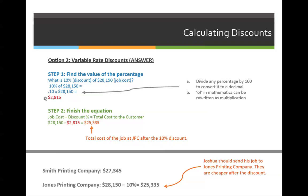We can rewrite that as 10% of $28,150, and then convert it to a math problem by dividing 10% by 100, which converts it to a decimal of .10. 'Of' becomes a multiplication sign, and then we bring down the last value. .10 times $28,150 gives a total discount of $2,815. Plugging that back into our original equation — job cost minus any discount — we have $28,150 minus $2,815, which leaves a total cost to Joshua of $25,335.